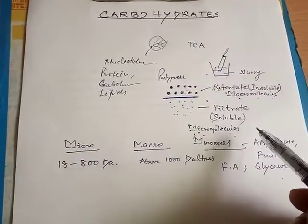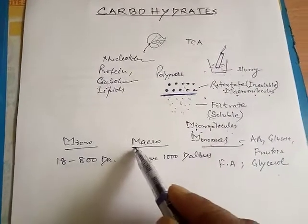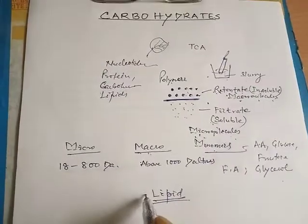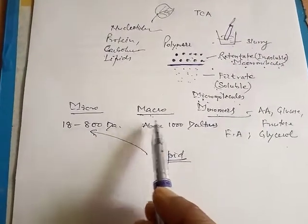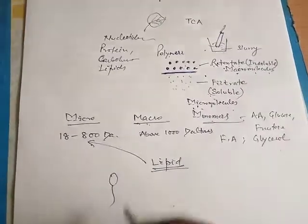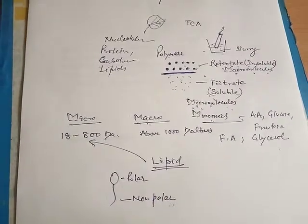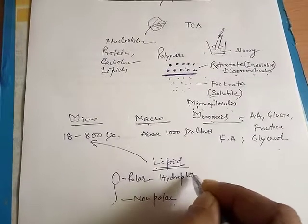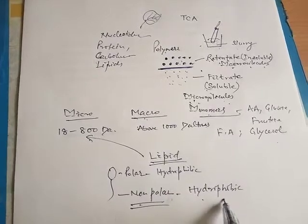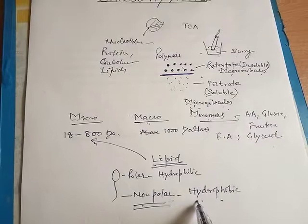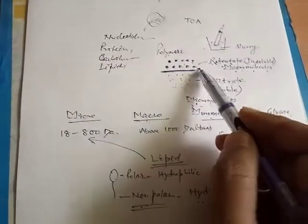We discussed that lipids are found in the retentate category, so they are categorized as macromolecules, but their molecular weight is below 800 Daltons. The reason is that lipids form micelles with a polar head region and a nonpolar tail region. The polar region is hydrophilic, whereas the nonpolar region is hydrophobic. Due to these nonpolar hydrophobic regions, lipids are not dissolved in the acid soluble fraction and are thus found in the macromolecular retentate category.